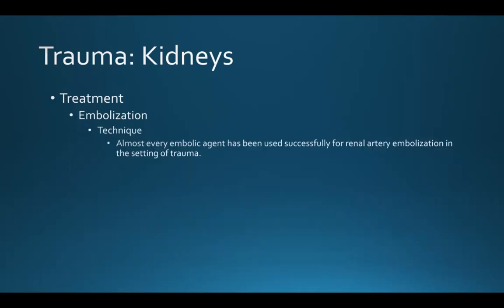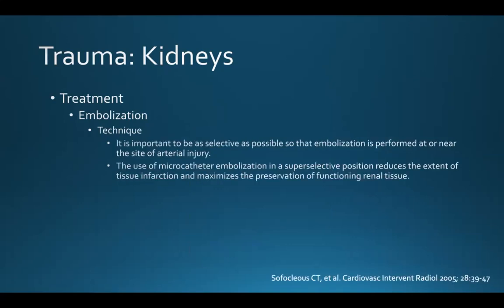Technically, almost every embolic agent has been used successfully for renal artery embolization in the setting of trauma. It's important to be as selective as possible so that embolization is performed at or near the site of arterial injury. The use of microcatheter embolization in a superselective position reduces the extent of tissue infarction and maximizes the preservation of functioning renal tissue, which is always a priority when treating a patient in the setting of renal trauma.